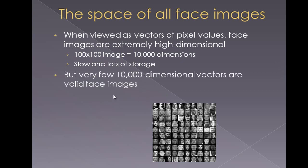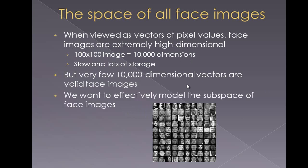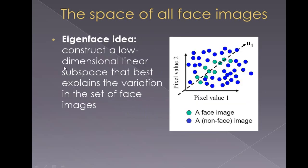The idea is to use PCA, which is principal component analysis, to reduce the feature vectors into a smaller dimension space. We try to construct a low-dimension linear subspace that best explains the variation in the set of face images that we have.